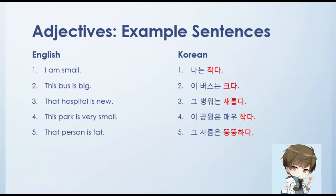Let's see some example sentences. First: 'I am small' — nanun, tsakta. Tsakta is the adjective meaning small. Second: 'This bus is big' — i bus nun, kuda. Third: 'That hospital is new' — ku byong woneun, saeroptda. Fourth: 'This park is very small' — i byong woneun, maeu, jakda. And last: 'That person is fat' — ku saramun, ttungttunghada.